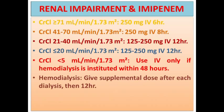For renal impairment, look at the clearance rate and decide the dose. First try to increase the interval between doses — from 6-hourly up to 12-hourly. If that is not sufficient, reduce the dose. It is not contraindicated even in end-stage renal disease with hemodialysis, but monitor renal function tests and decide what is best for the patient.